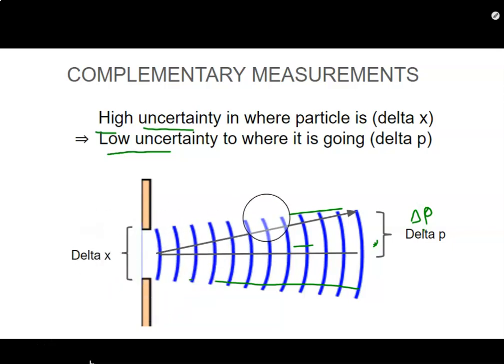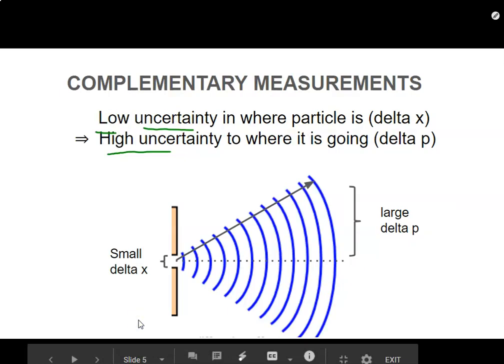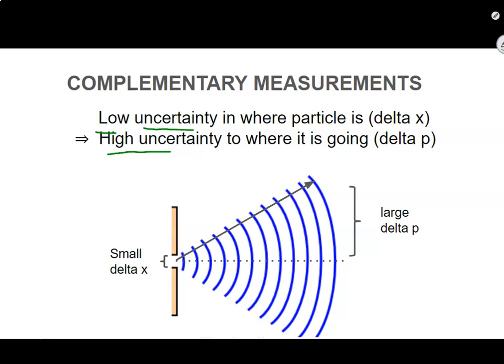So if we then change our gap, in other words, we make it smaller, we already know what's going to happen in terms of the diffraction. So if I have an arbitrarily small gap, my uncertainty in x is pretty small. I'm pretty sure I know where it is, but I get a large diffraction. So I get a large uncertainty in the momentum. So we get the reverse of what we saw before. We have a low uncertainty where it is, but that corresponds to a high uncertainty of where it's going.